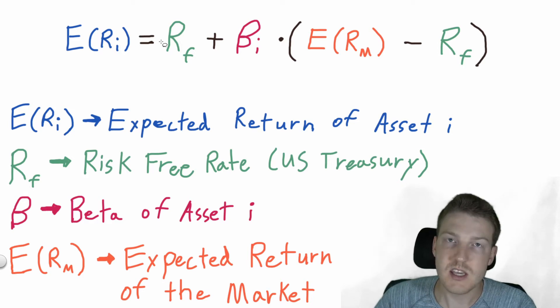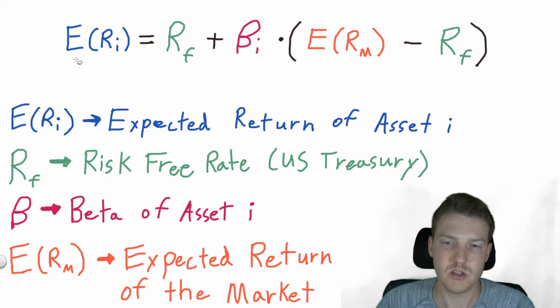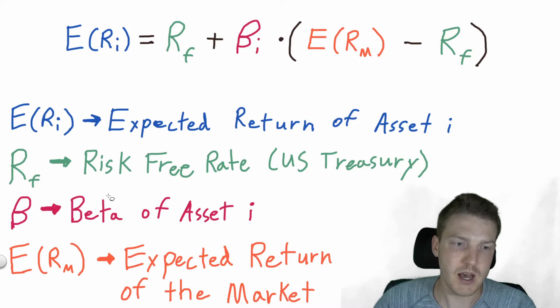And then it's equal to the risk-free rate, and usually this would just be the rate that you can earn on a U.S. government treasury security. So it's assumed to be risk-free in the field of finance. So the risk-free rate plus beta, see this, B-I, that's a beta of asset I.